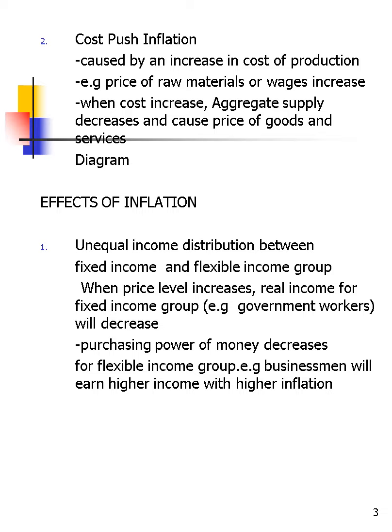The second type is cost-push inflation, which occurs because of an increase in the cost of production — referring to the supplier side, not the consumer. For example, when the price of raw materials or wages increases, the firm's cost of production increases and they raise the price of goods and services. Make sure you find the diagram for both cost-push and demand-pull inflation.